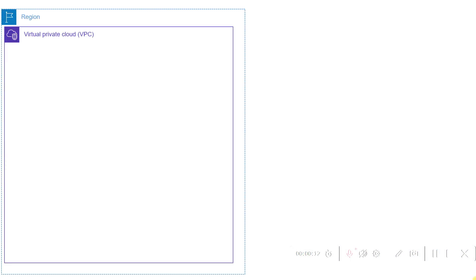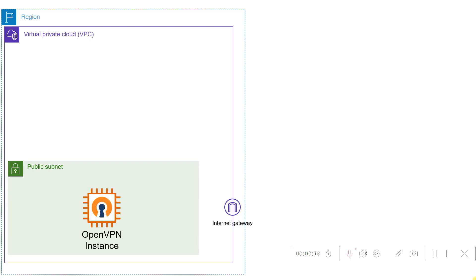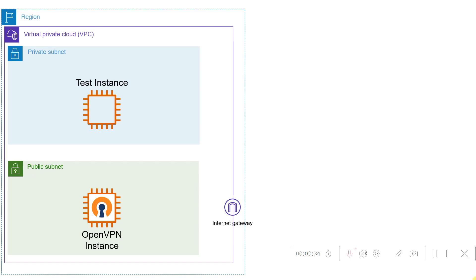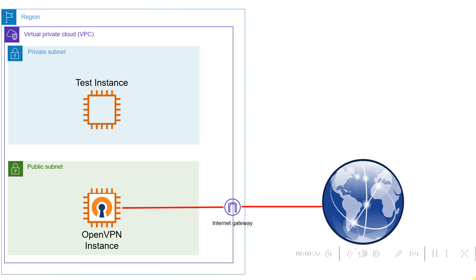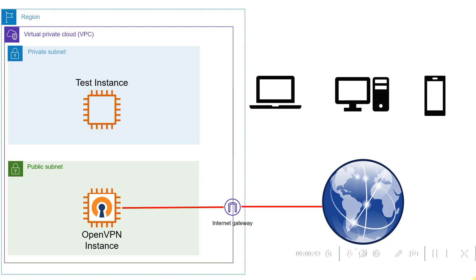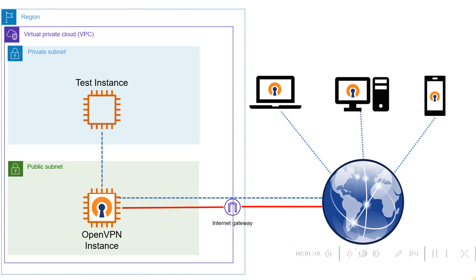In one region we'll configure one VPC with an internet gateway. We'll configure one public subnet, and in the public subnet we'll configure an OpenVPN instance. We'll also configure one private subnet. In the private subnet we'll create a test instance for testing purposes, so we can access this test instance using its private IP address from our machines. From the internet we can access the OpenVPN instance once it is configured, and we can install the OpenVPN client on our local machines to access this test instance using the VPN connection.